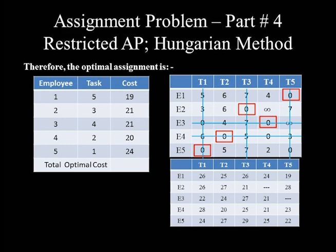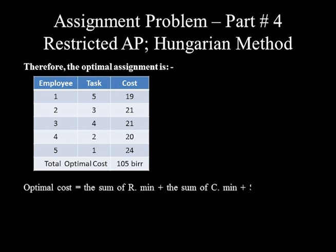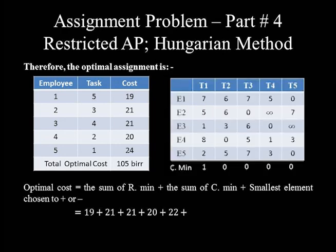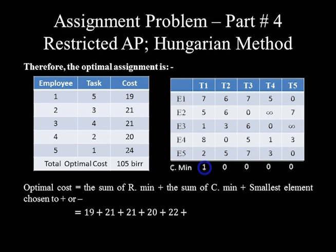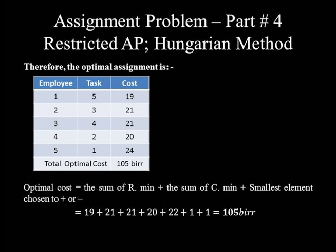The total optimal cost equals 19 plus 21 plus 21 plus 20 plus 24, which equals 105. We can verify this using the formula: optimal cost equals the sum of row minimums plus the sum of column minimums plus the smallest element chosen in step 3. That is: (19+21+21+20+22) plus 1 (the only non-zero column minimum) plus 1 (the step 3 element) equals 105. The equality of these two results confirms the optimal cost is correct and the assignment is truly optimal. Goodbye.